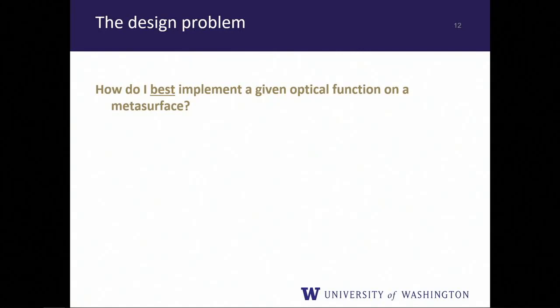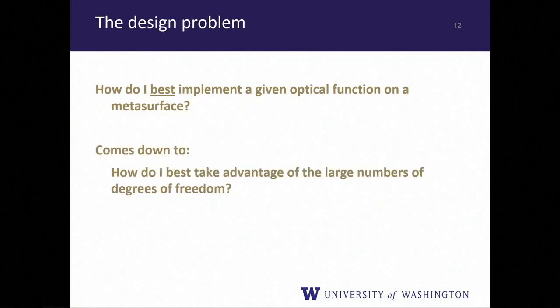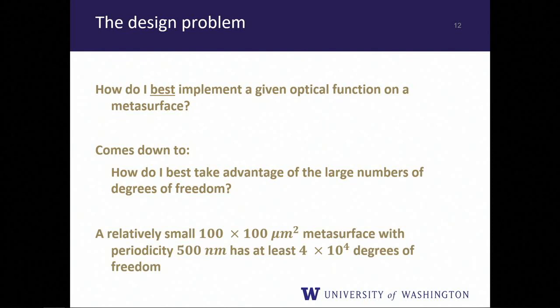The key question is: given this metasurface, how do I best implement a given optical function, and how do I best take advantage of the large number of degrees of freedom? A relatively small 100 µm × 100 µm metasurface with a grating periodicity of ~500 nm has at least 4×10⁴ degrees of freedom — if you're only changing a single parameter per unit cell.